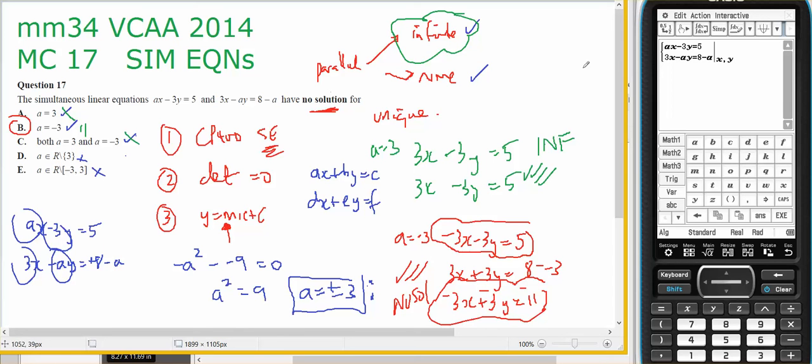What does that look like on the calculator? So I've entered it up over here into the simultaneous equations. And you'll notice that when I press xc and I explore the denominators, the only value that it picked up was a equals negative 3. But in actual fact, I should have picked up a equals positive 3 as being a problem as well.